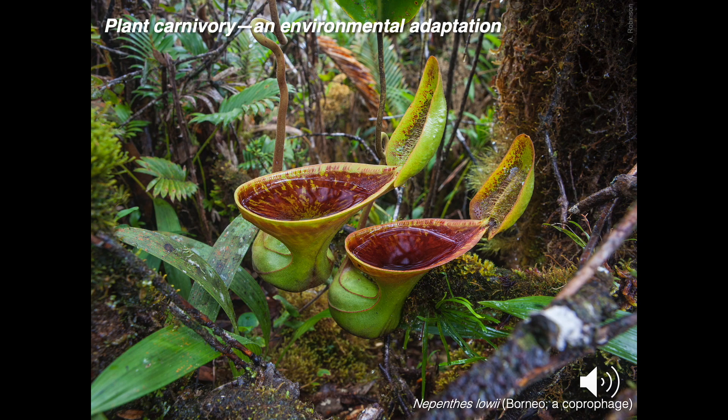So, why be carnivorous? The answer lies in every environment that present-day carnivorous plants occupy. The answer is simply soil nutrient deficiency. To compensate, these plants have evolved to extract nutrients from animals instead of from soil. Or, in the case of the plant shown here, from the faecal material of tree shrews, which are squirrel-like animals most closely related to primates. They simply straddle the pitcher, nibble an exudate produced under its lid, and defecate directly into the urn below, which is amazing.